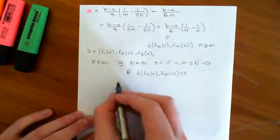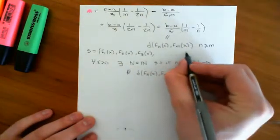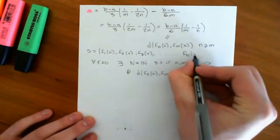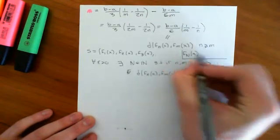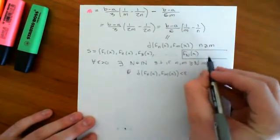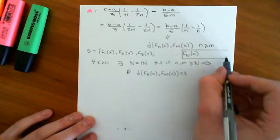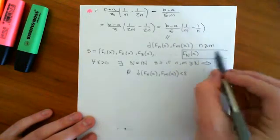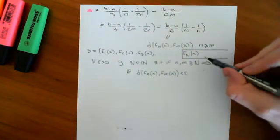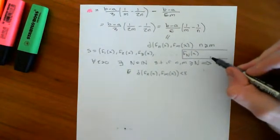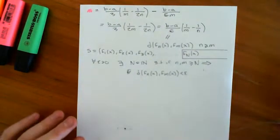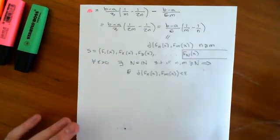What we need to do is find some F big N of x, such that if you choose any two terms of this sequence, F little n of x and F little m of x, which are beyond it, then the distance between them is going to be less than epsilon. So let's imagine we've found such a big N.